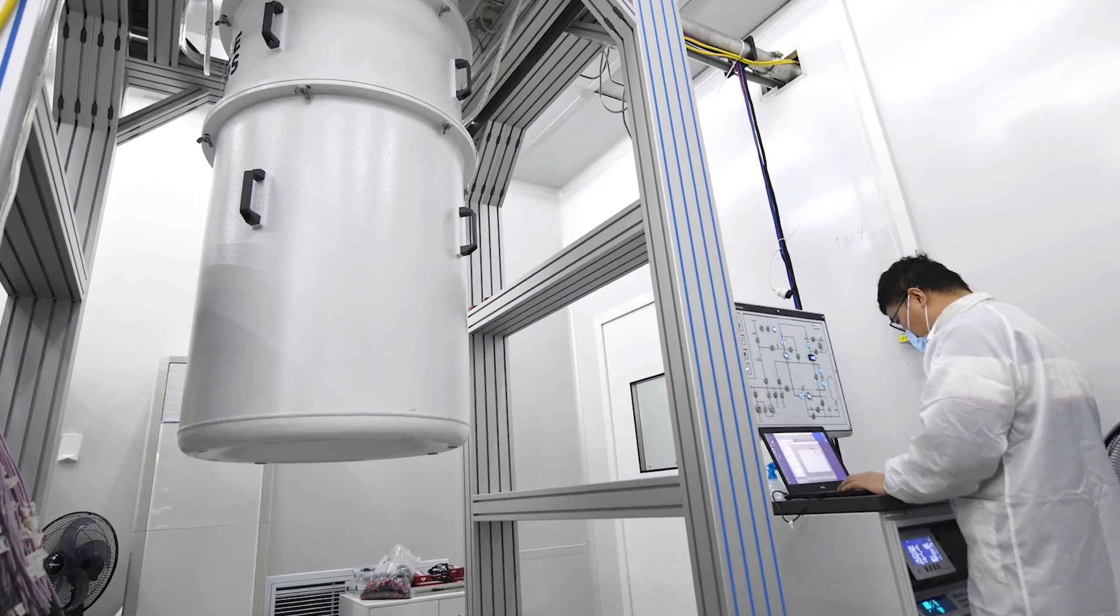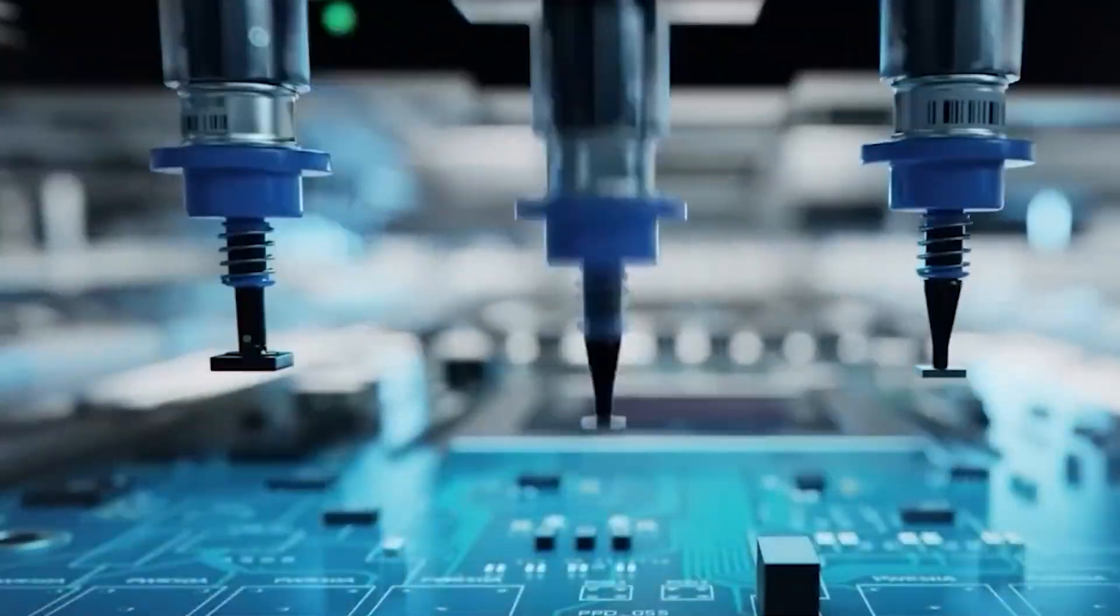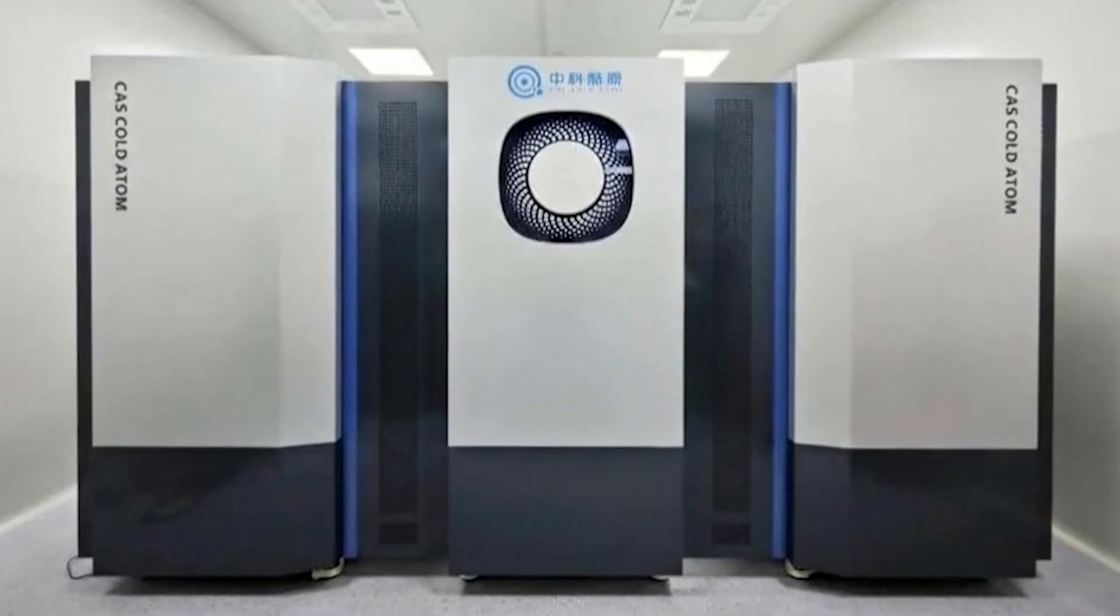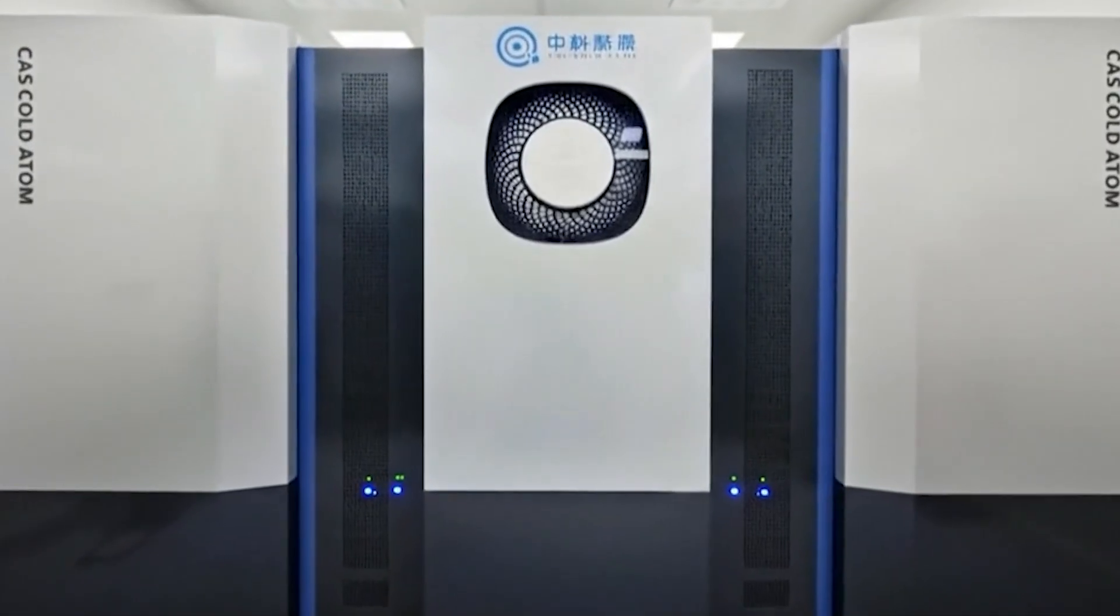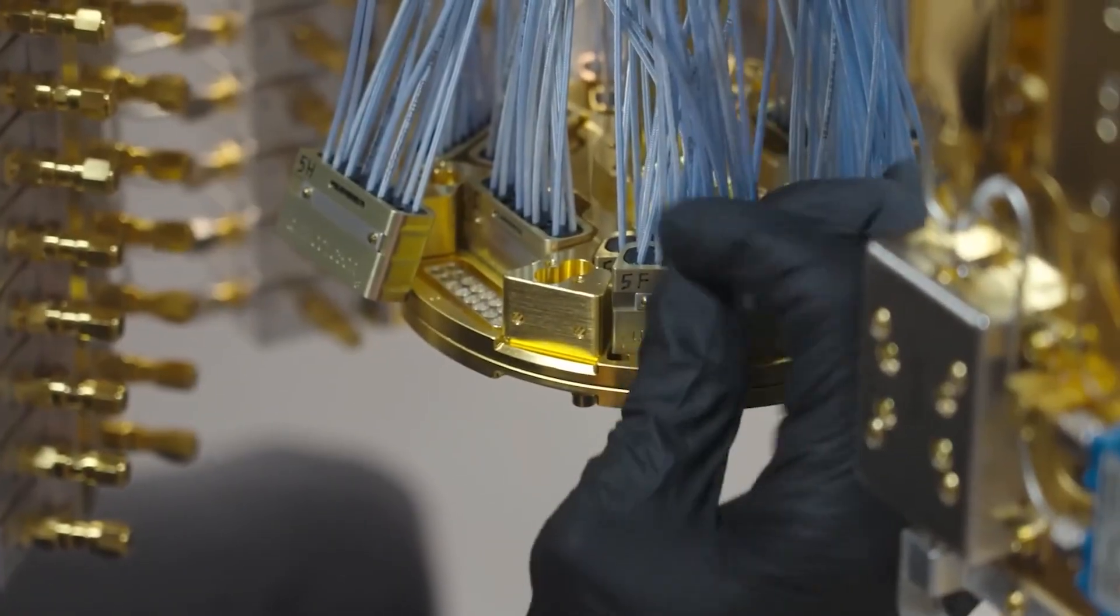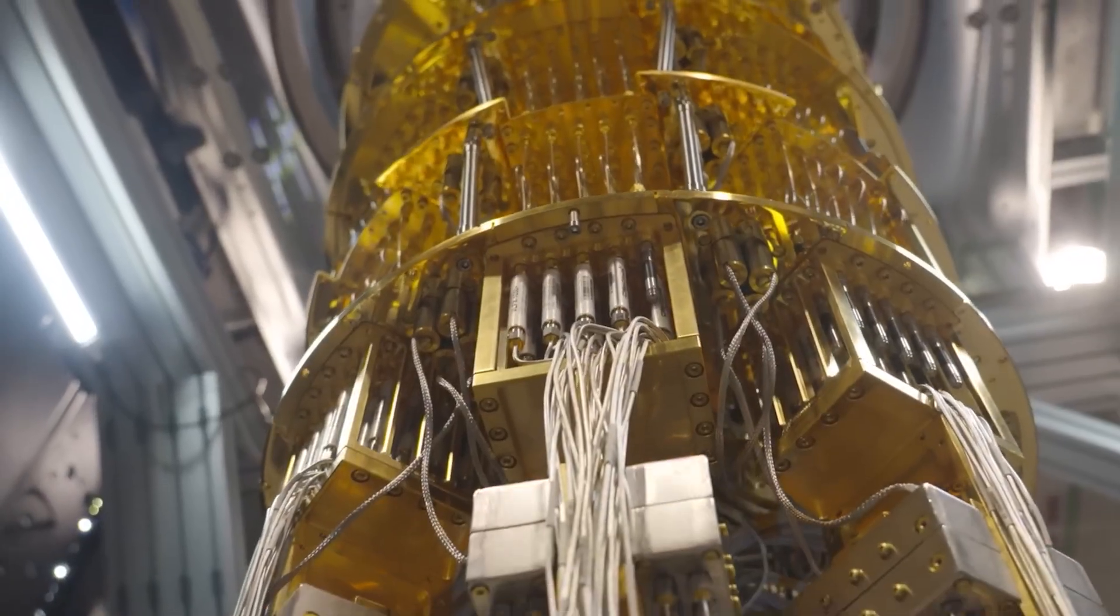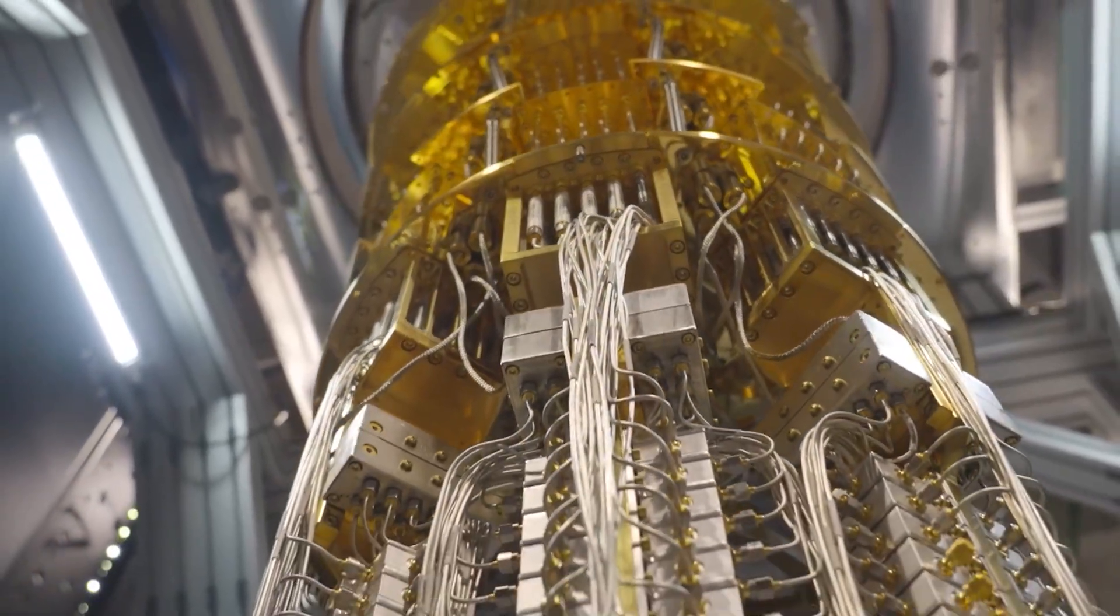But Hanyuan-1 takes a different approach. Instead of superconducting circuits, it uses neutral atoms as qubits. These atoms are cooled using lasers and held in place by optical traps. Their quantum states are controlled with extremely precise light-based techniques. This method avoids the need for cryogenic refrigeration entirely. The system operates in a standard laboratory environment using equipment that, while complex, is far more manageable than ultra-low temperature systems.